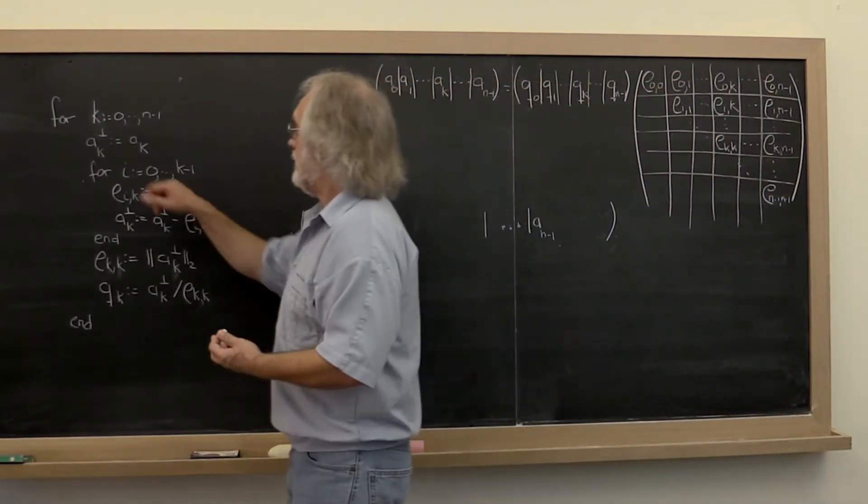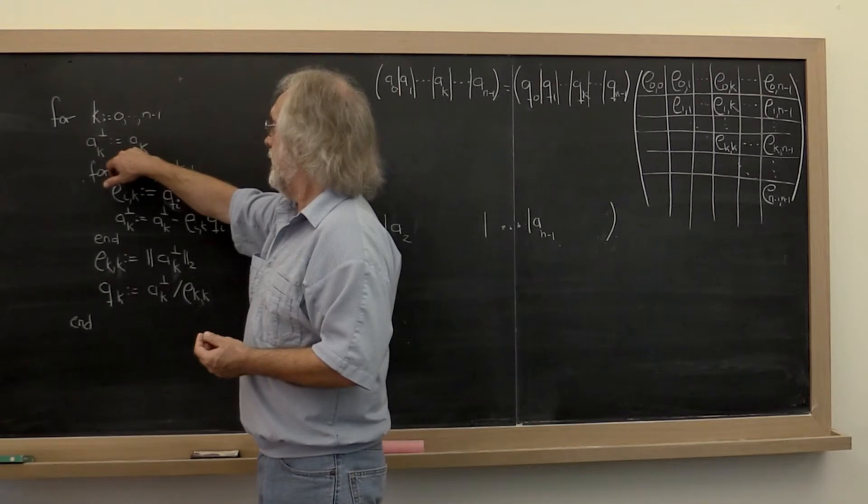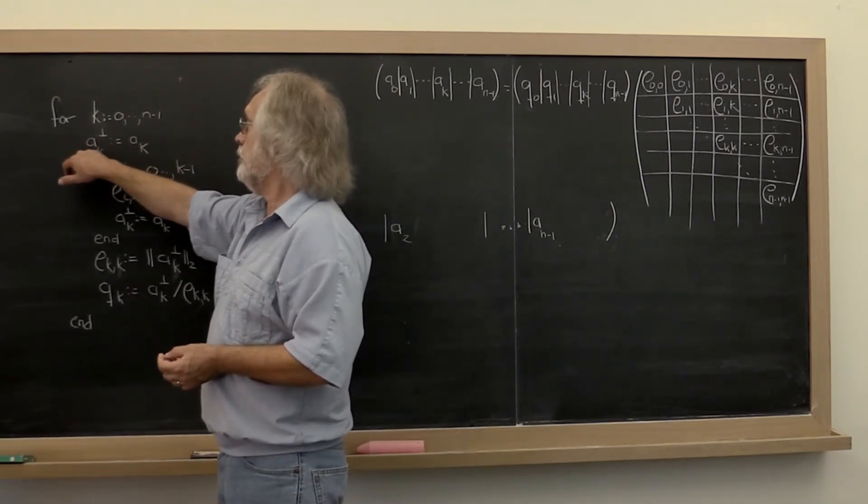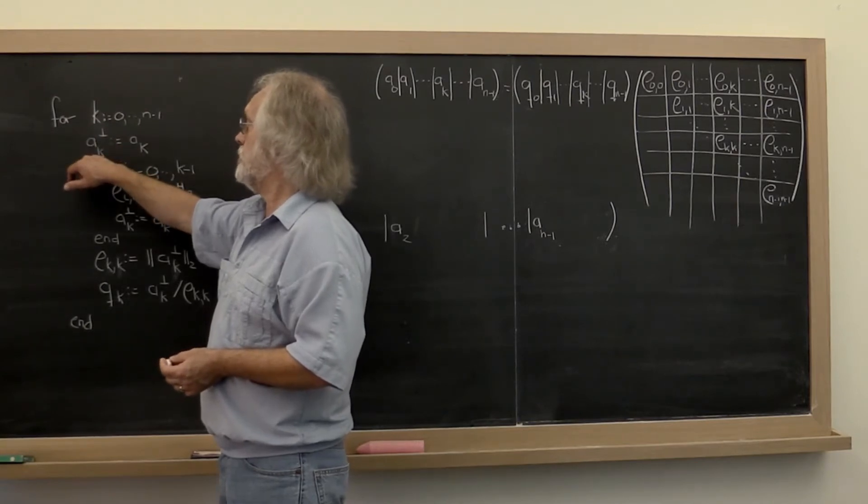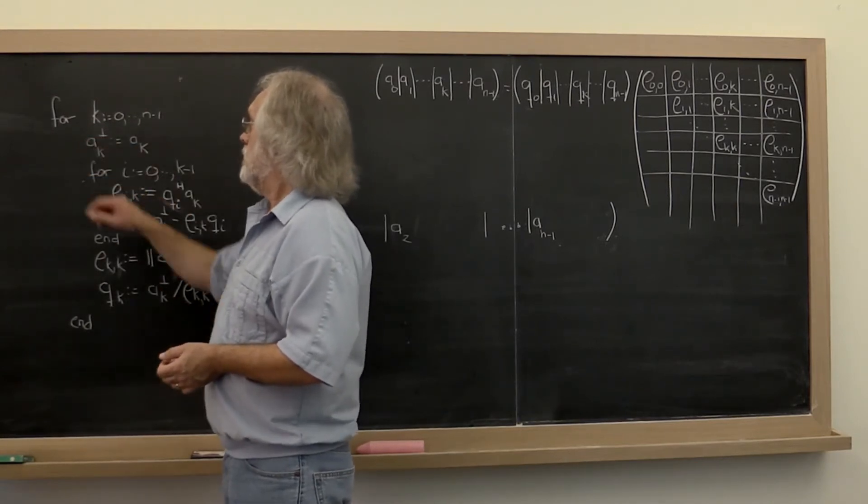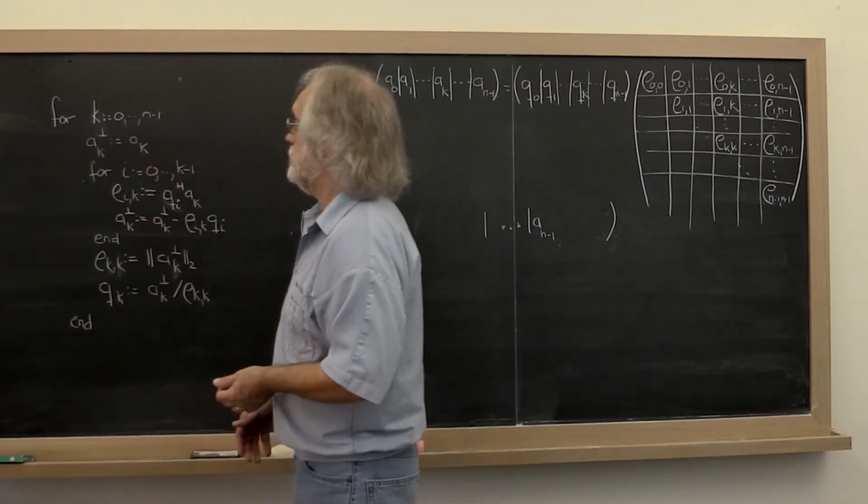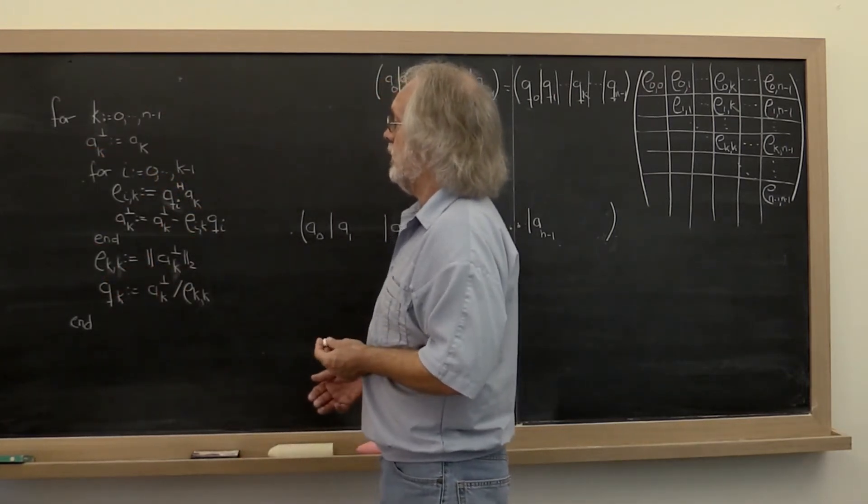And then for that new vector, Ak, that new column, what we do is we copy it over into a vector in which we're going to compute the orthogonal component, the component orthogonal to the previous q0 through qk-1 that already have been computed.